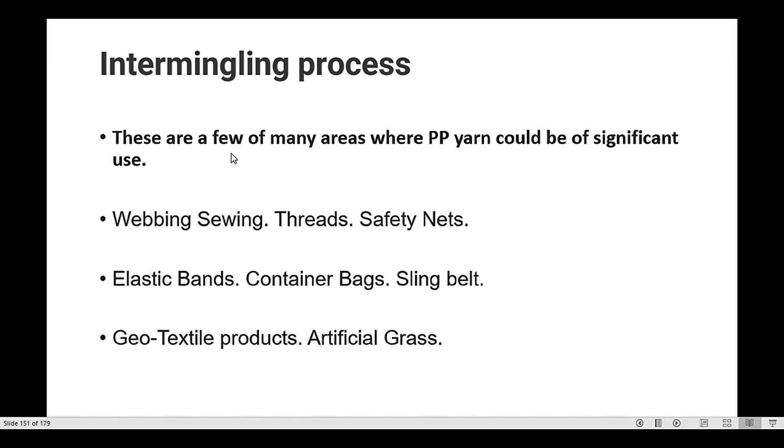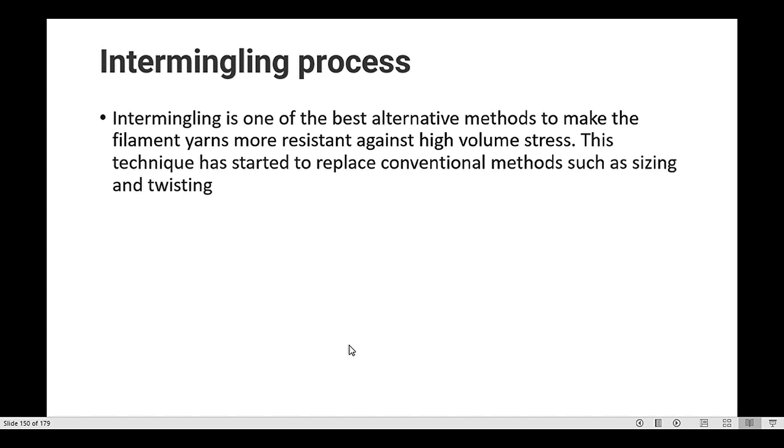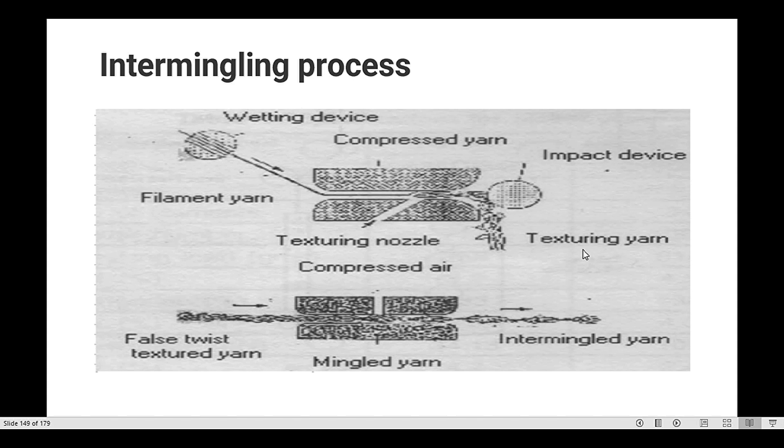There are a few main areas where PP yarn could be of significant use: web sewing threads, safety nets, elastic bands, container bags, sealing belts, geotextile products, and artificial grasses. This was a short introduction to the intermingling process.